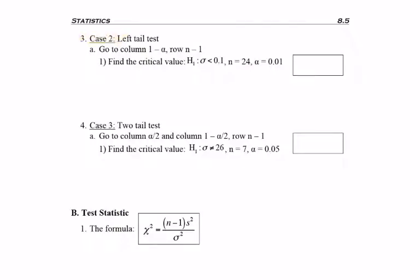Case two is when you have a left-tailed test. You'll still be going to row n-1, because degrees of freedom doesn't change. But remember, the column is area to the right, and since this is a left-tailed test, we'll need the complement of that amount, which would be 1 minus alpha.